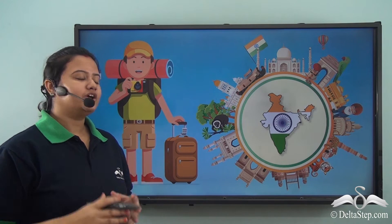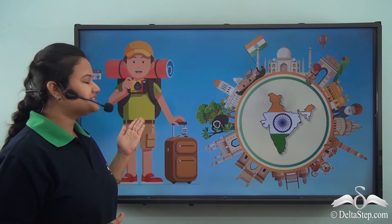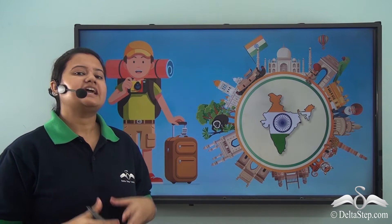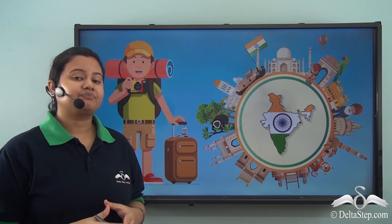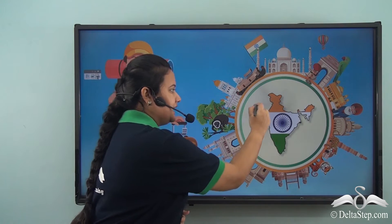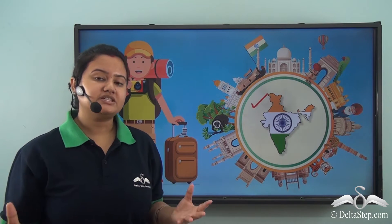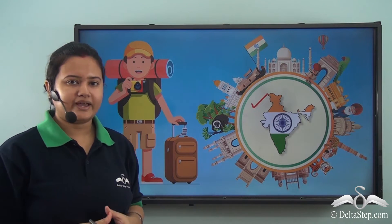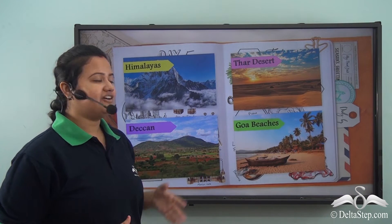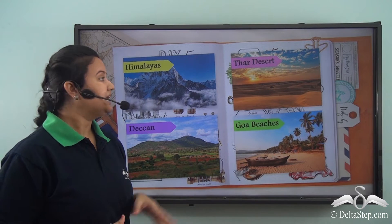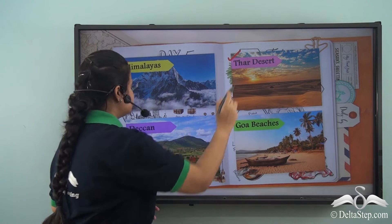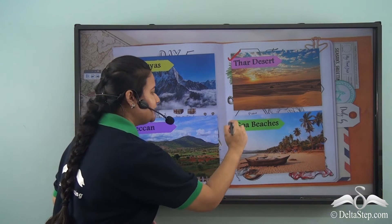Let me introduce you all to Mr. Johnny. He is a wanderer — that is, he loves to travel a lot. Recently he has taken a complete tour of our country India and has visited many foreign countries as well. Here we have some pictures from his travels, and in these pictures we can see the Himalayas, Thar Desert, Deccan region, and Goa beaches.